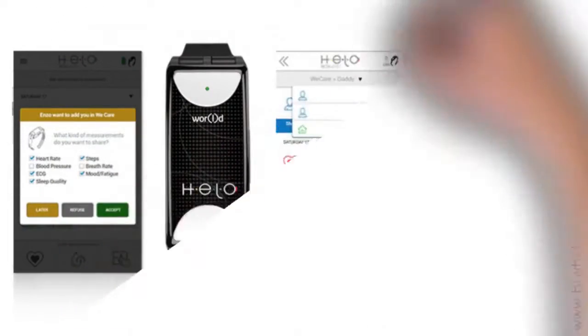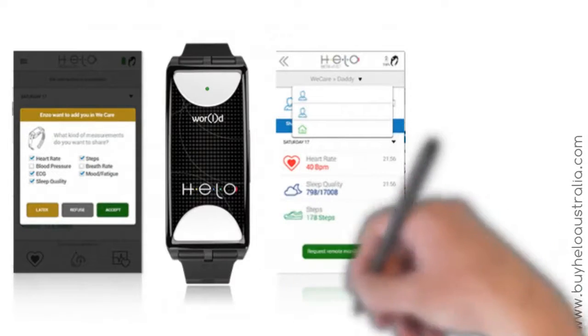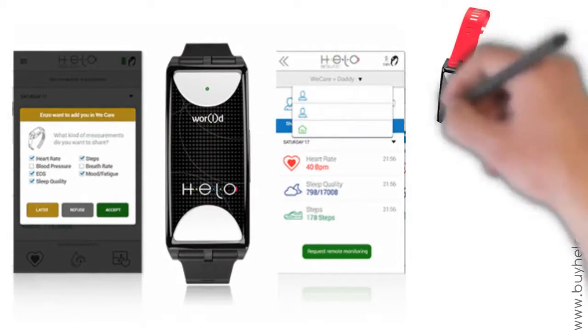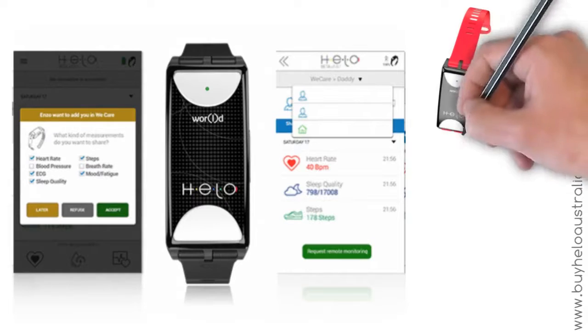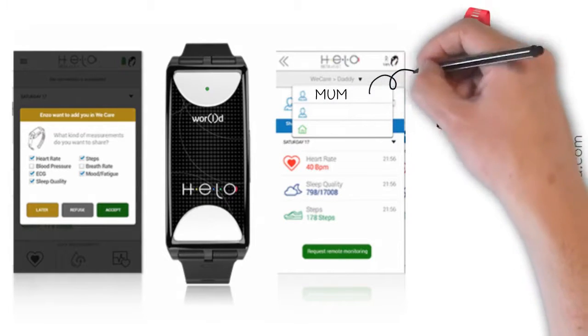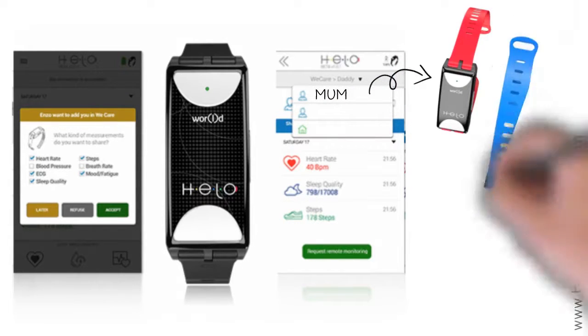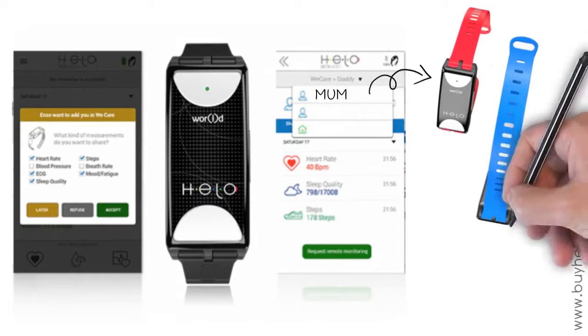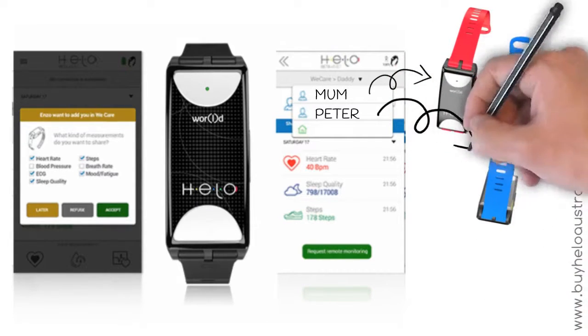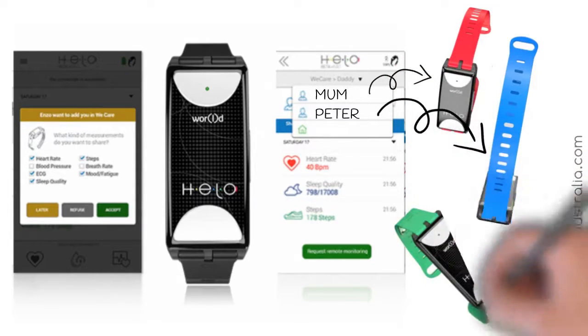You may choose to monitor your friends or relatives through WeCare. It's an advanced feature of the HELO app that allows you to add as many contacts as you like in order to monitor their vital parameters. Your contacts will decide whether or not to allow you to read their data. It is a very useful function, especially in a family with children or elderly members.